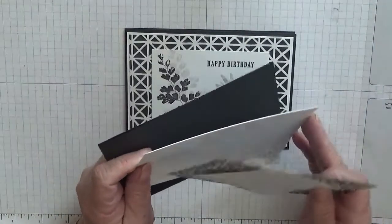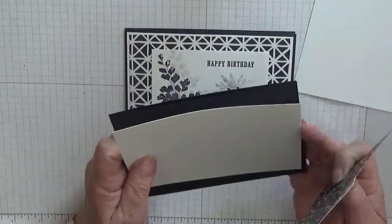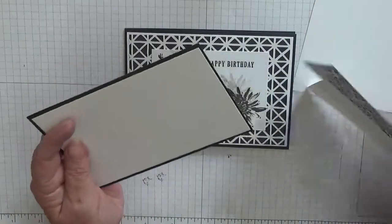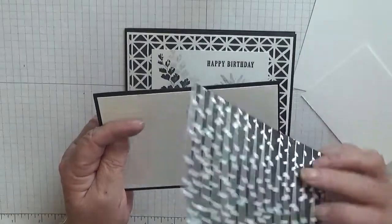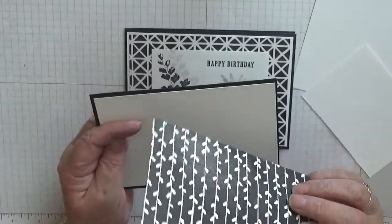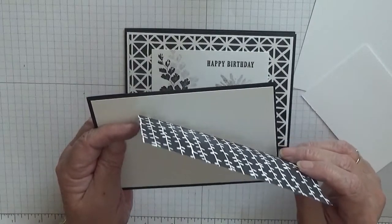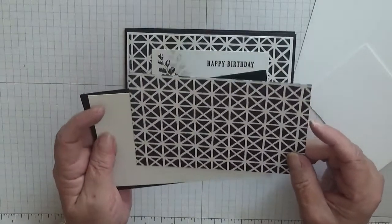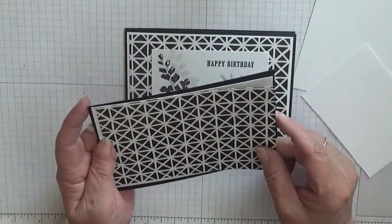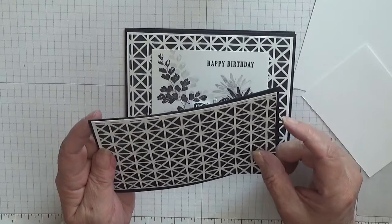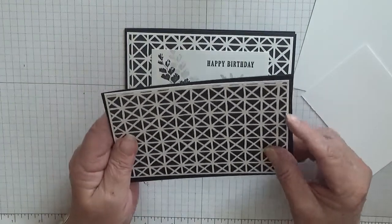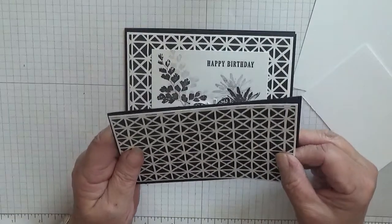I've got a piece of white at five and five-eighths by three and seven-eighths. I have a piece of DSP, now this is from the painted palette, the one with the rose and the bird. This is retired but I'm sure people have got black and white paper in their stash. And this is cut at five and a half by three and three-quarters.